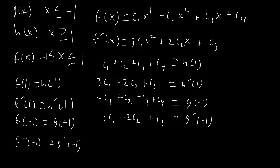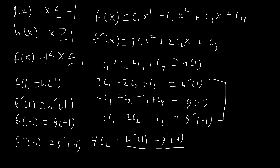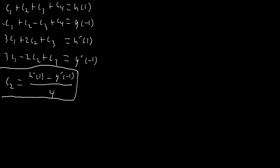The first step is to take equations two and four and subtract equation four from equation two. We get that 4 c2 equals h prime of one minus g prime of negative one, so c2 equals h prime of one minus g prime of negative one, all over four. We have already successfully solved for one of our constants.